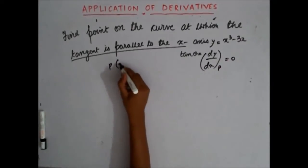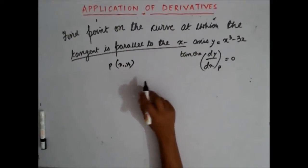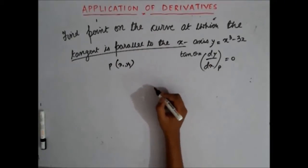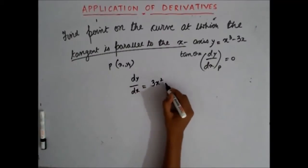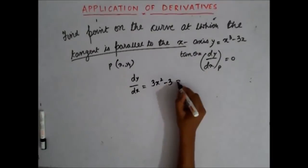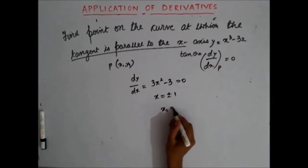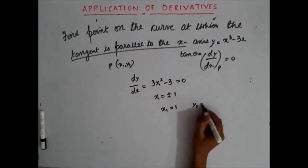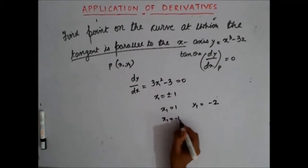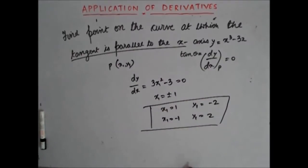Let P be (x1, y1). Let's find dy/dx at P and equate it to 0. dy/dx is 3x² - 3, and this equals 0, which means x = ±1. When x1 = 1, y1 = -2. When x1 = -1, y1 = 2. So these are the points at which, if you draw a tangent, the tangent will be parallel to the x-axis.